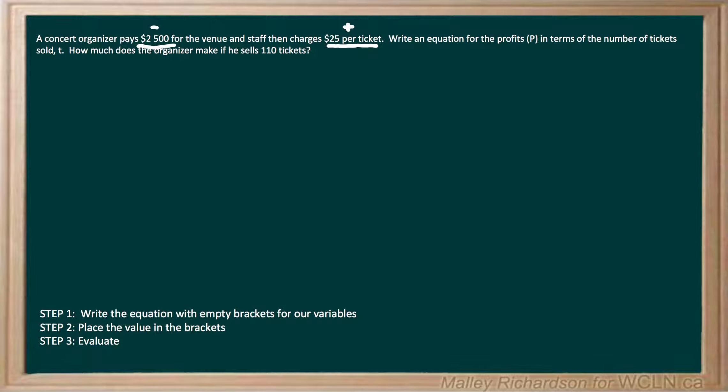So now let's write an equation and then place empty brackets for what we need to solve. We have our variables of P, which represents profits, and T, which represents the tickets sold. So let's start it off by the profit that he makes equaling the tickets sold multiplied by $25, because it's $25 per ticket that he sold. And then we have to subtract the money that he gave to pay for the venue, so $2,500.